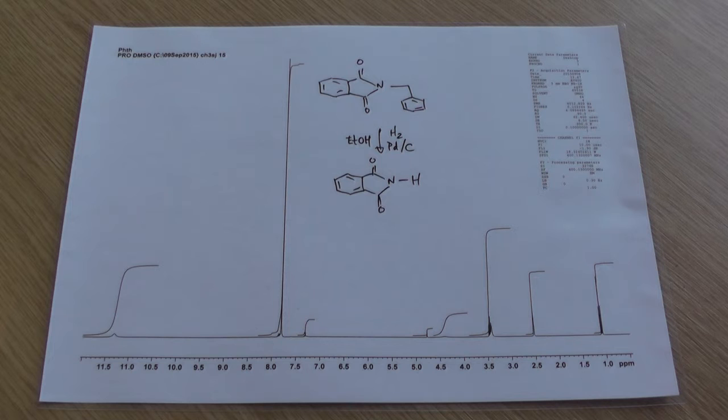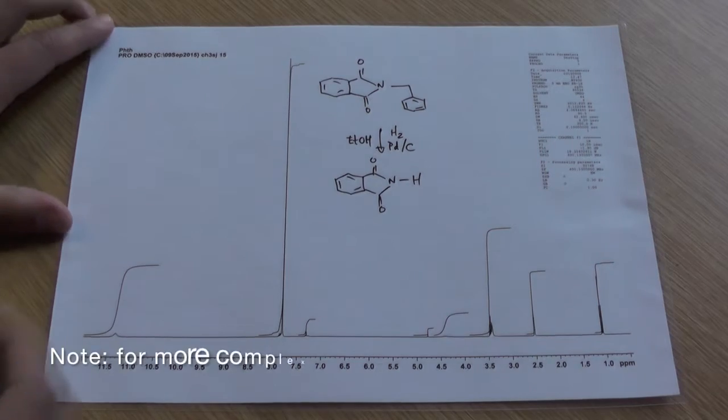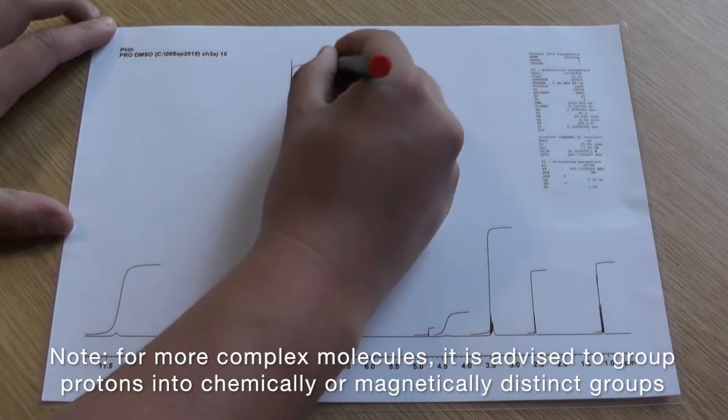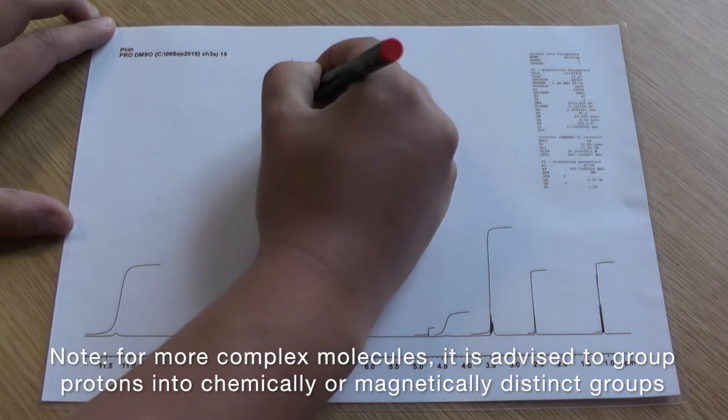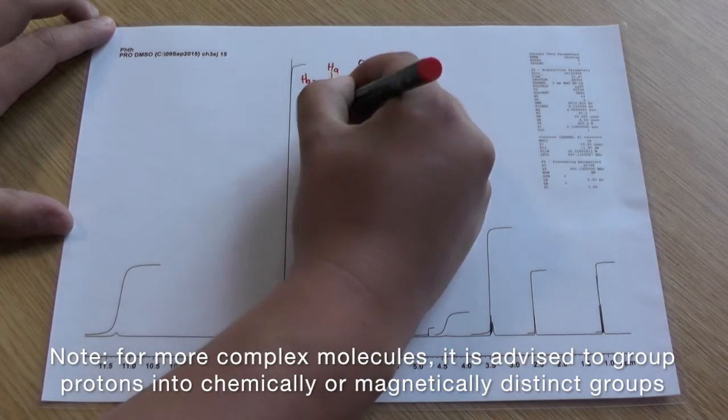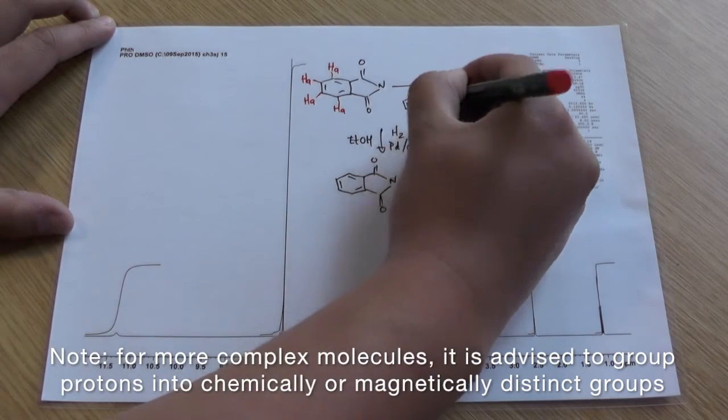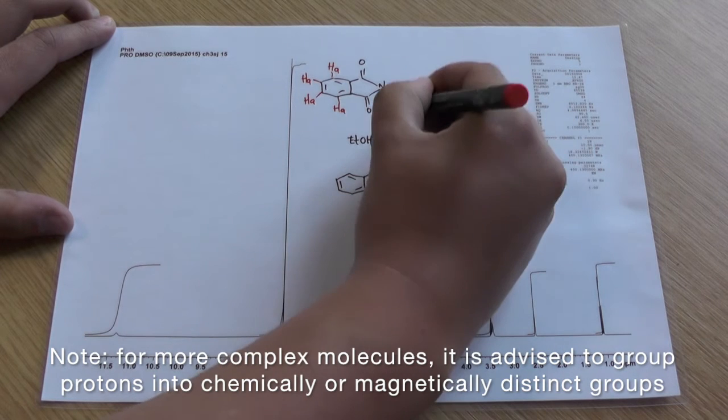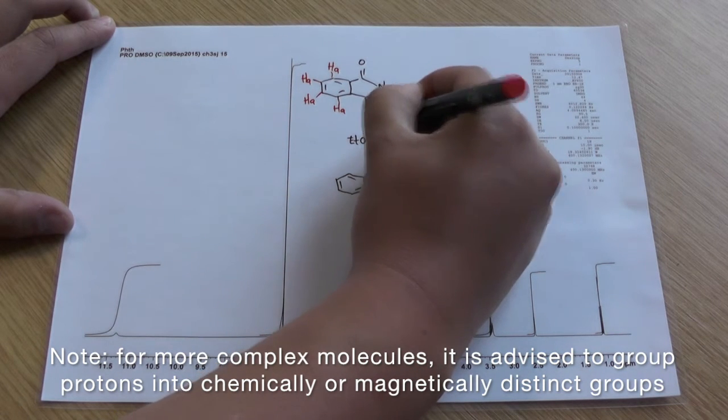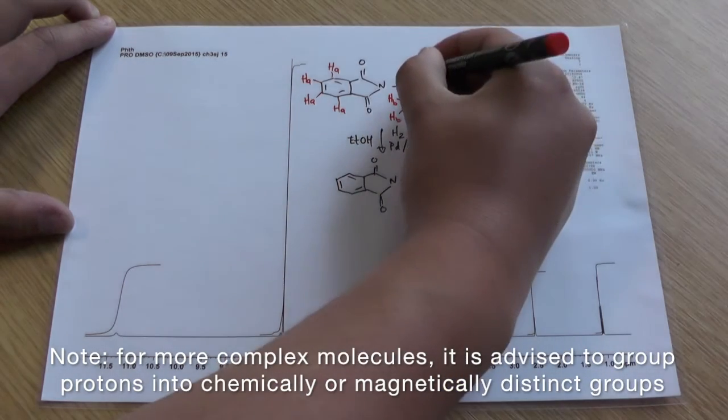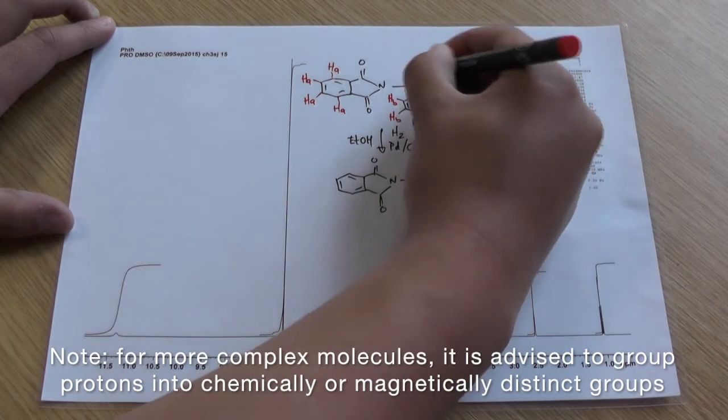The first thing you can do is look at your starting materials and products and think about what peaks you might expect to see. In your starting material you have four aromatic protons on the left hand side of the molecule, we are going to call these HA. Then you also have five aromatic protons on the right hand side of the molecule, we are going to call these Hb. And finally you have the two aliphatic protons which we are going to call Hc.